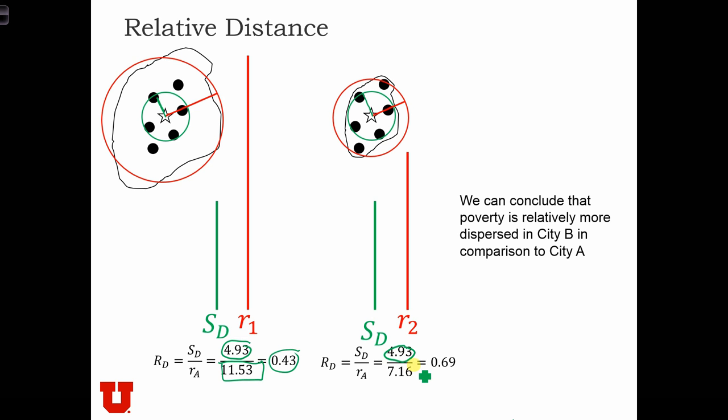In the second case study, the radius of the circle was smaller, only 7.16. And in that case, the relative distance ratio is almost 70%. In other words, the point distribution in the smaller city covers about 70% of the area, whereas in the larger city, it only covers about 43%. So in this case, we can conclude that poverty is more dispersed in City B in comparison to City A.